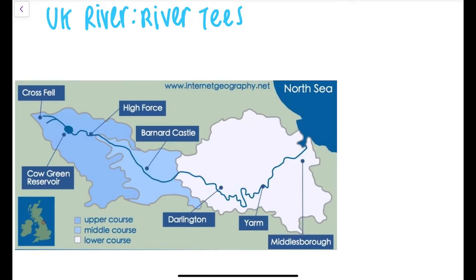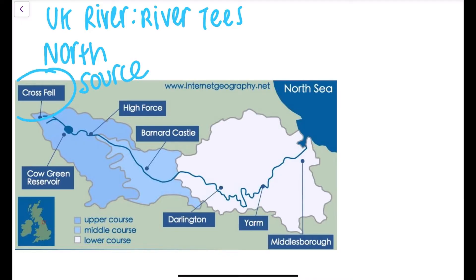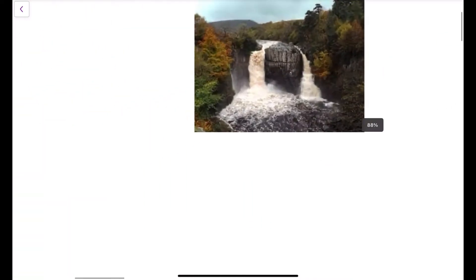This video is all about your UK river case study, which is the River Tees. You could get asked about landforms or river management. The River Tees is located in the north of England, with its source at Cross Fell in the Pennines, and the river flows east to its mouth at the North Sea — from the rural areas of the Pennines down to urban areas such as Middlesbrough.